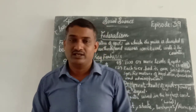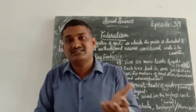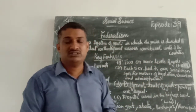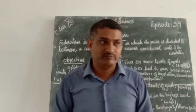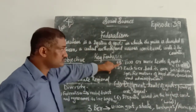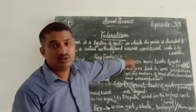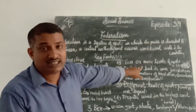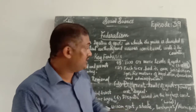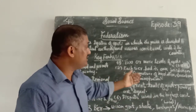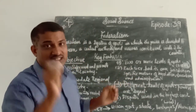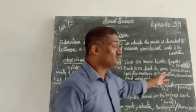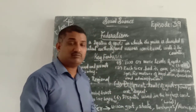Then only the country will be developed. That is why our country practices the federal form of government. There are two or more levels of government — you can call them tiers of government. Each tier has its own jurisdiction, in a specific manner of legislation, taxation, and administration.